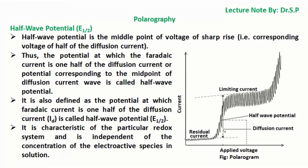Half-wave potential (E½): The half-wave potential is the midpoint of the voltage of the sharp rise, corresponding to the voltage at half of the diffusion current. Thus, the potential at which the Faradaic current is one-half of the diffusion current ID — or the potential corresponding to the midpoint of the diffusion current wave — is called the half-wave potential E½. It is characteristic of the particular redox system and is independent of the concentration of the electroactive species in solution.